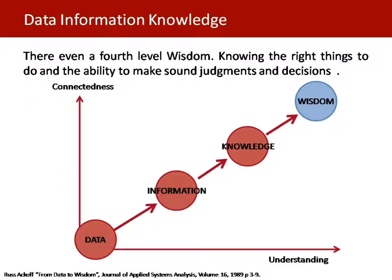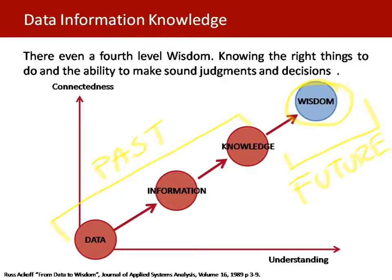In some cases, there is even a fourth level called wisdom, which is knowing the right things to do and the ability to make judgments based on decisions. All of these components mostly deal with the past — the data you collected, the information you captured and analyzed, and the knowledge and experience you gained. Wisdom deals with the future: now that I know, how can I use that knowledge and experience to make future decisions, changes, and modifications to my plans and actions?